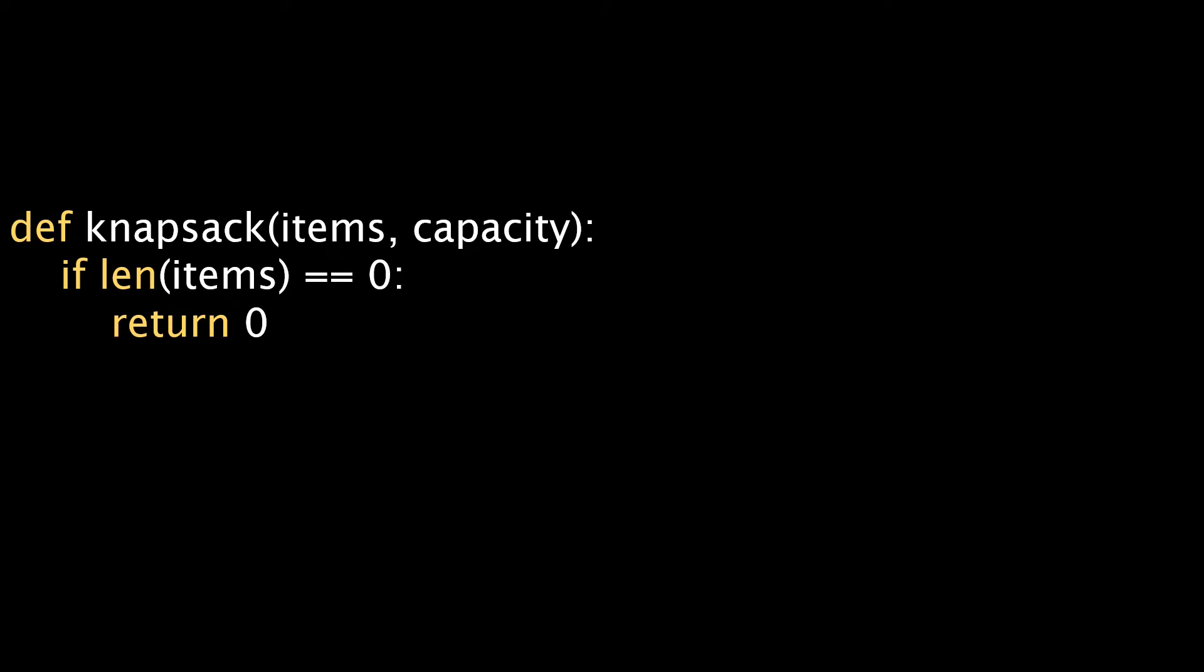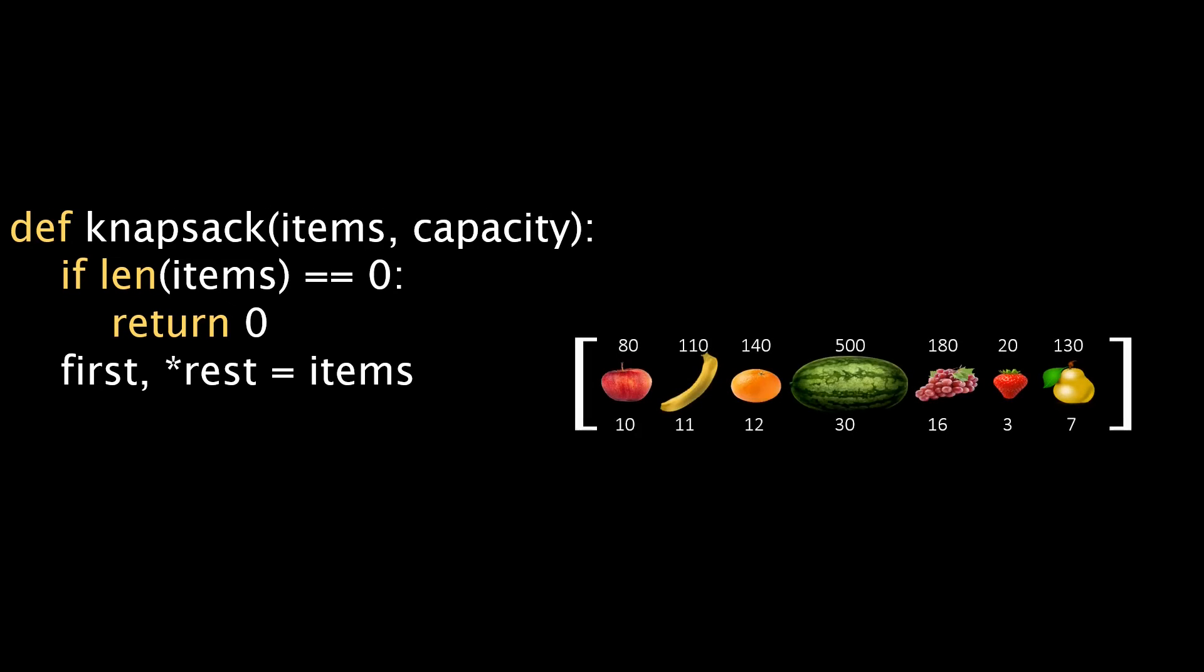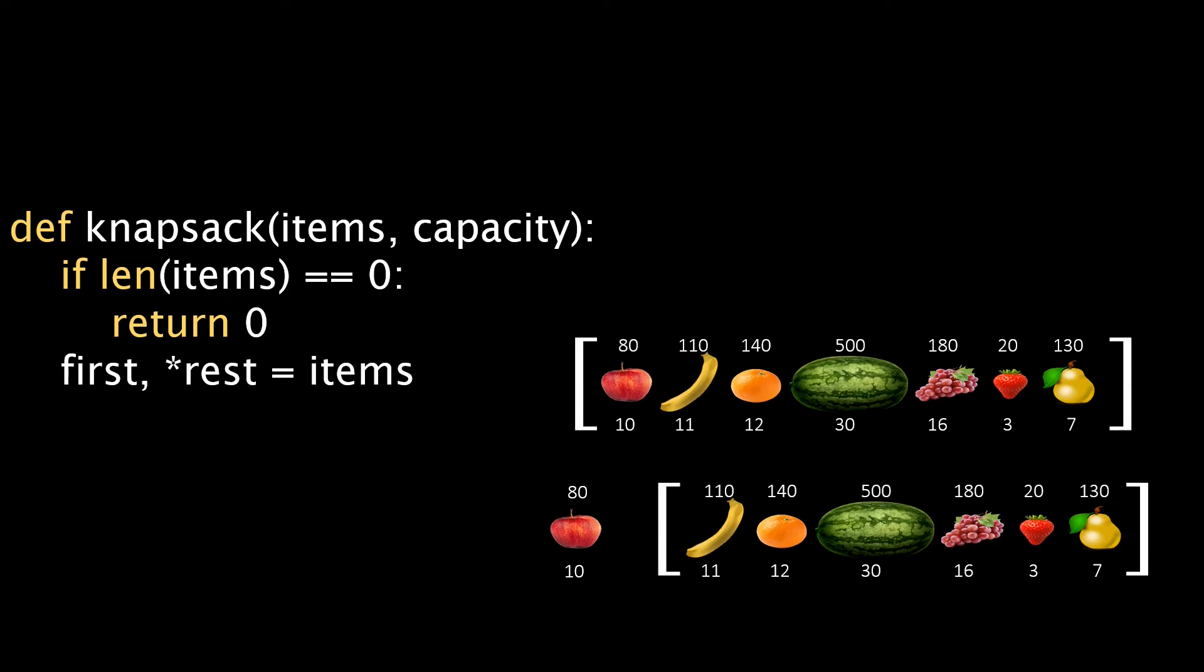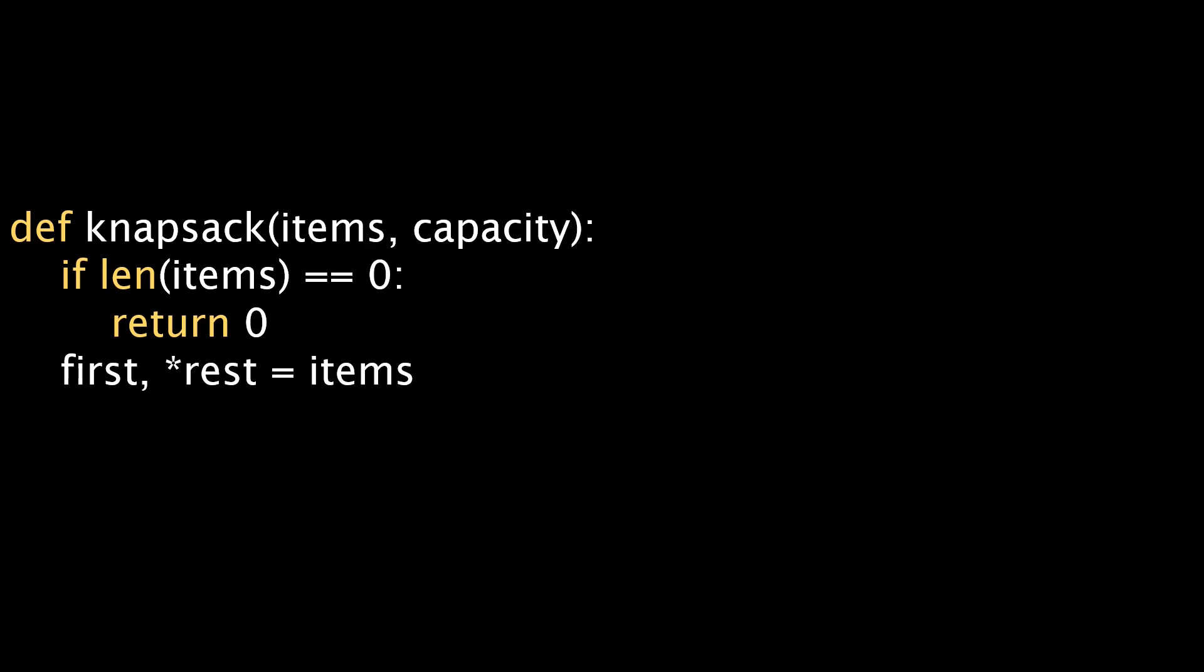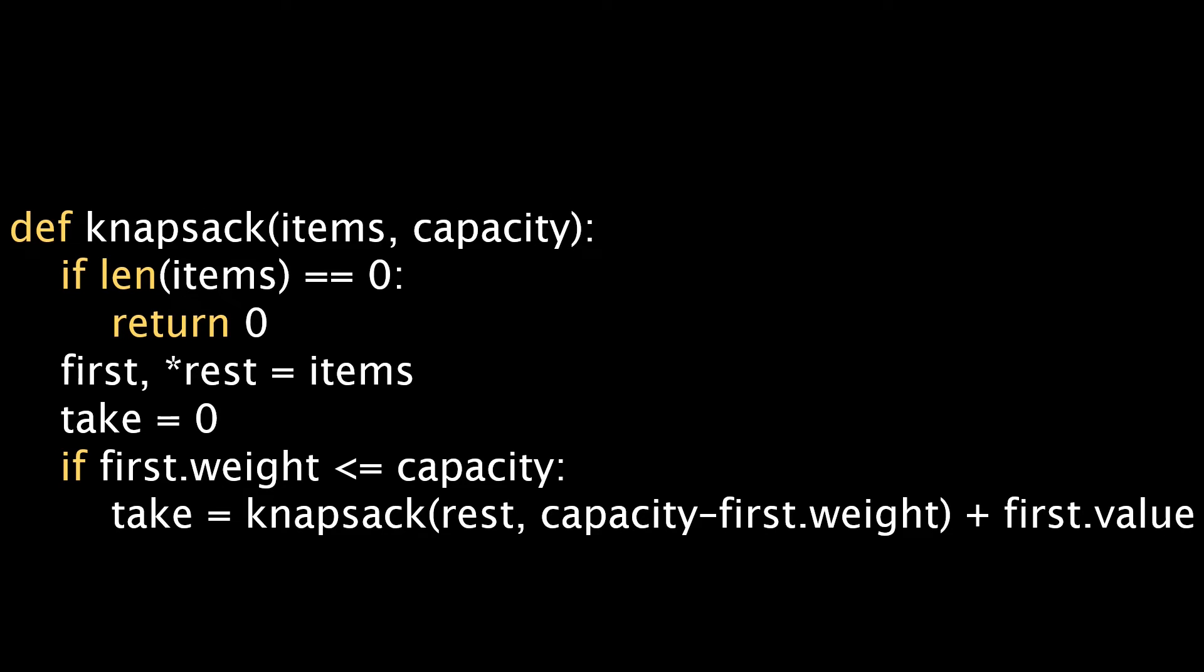If the list is not empty, we use recursion. First we split the list into two parts: the first item and the rest of the list. Now we compute the solution if we do take the first item. We only do this if the weight of the first item is at most the remaining capacity, else the item is too heavy. If the first item still fits, we call knapsack recursively. The items are simply the remaining rest of items. The remaining capacity is the original capacity minus the weight of our first item.